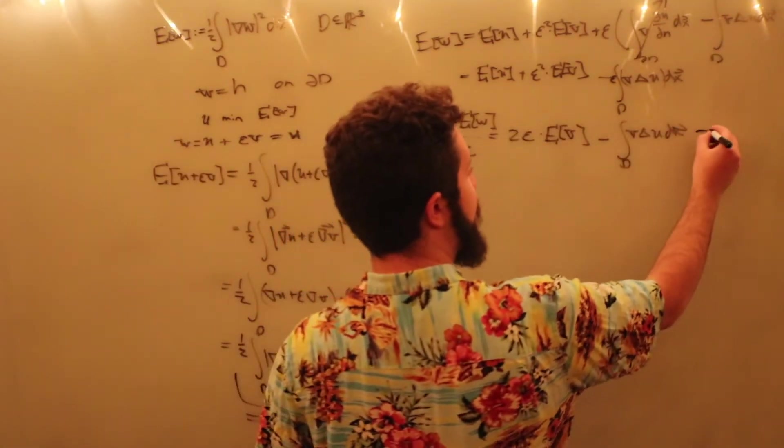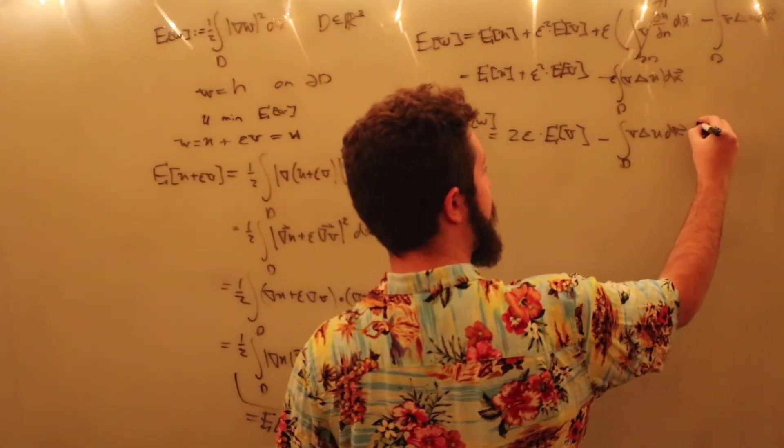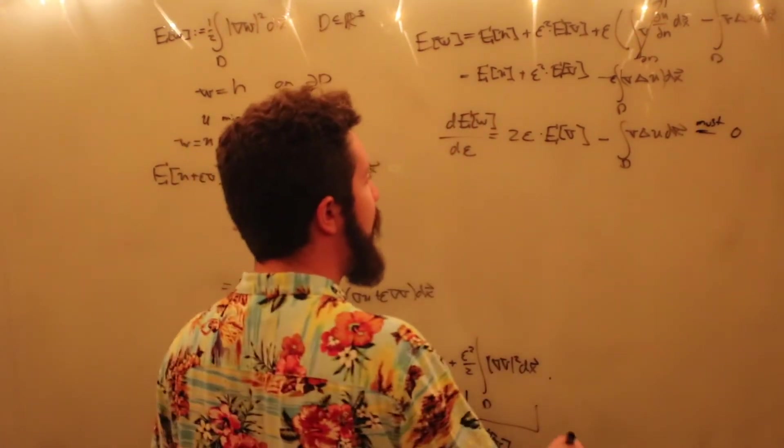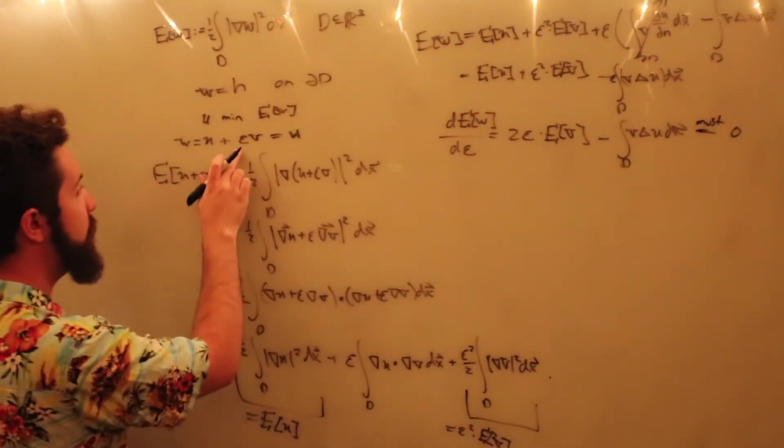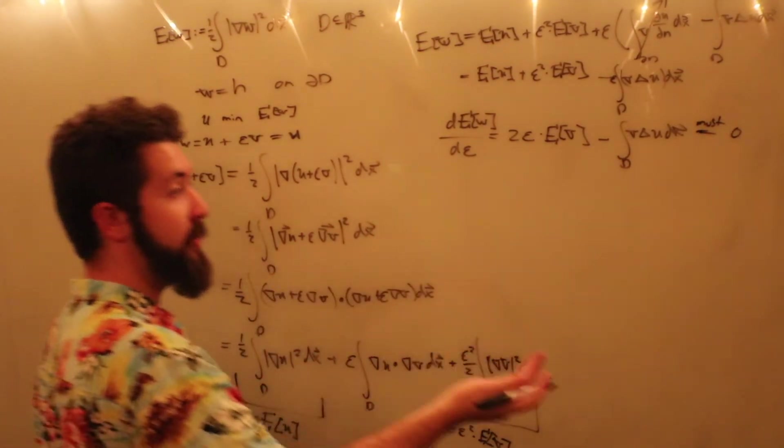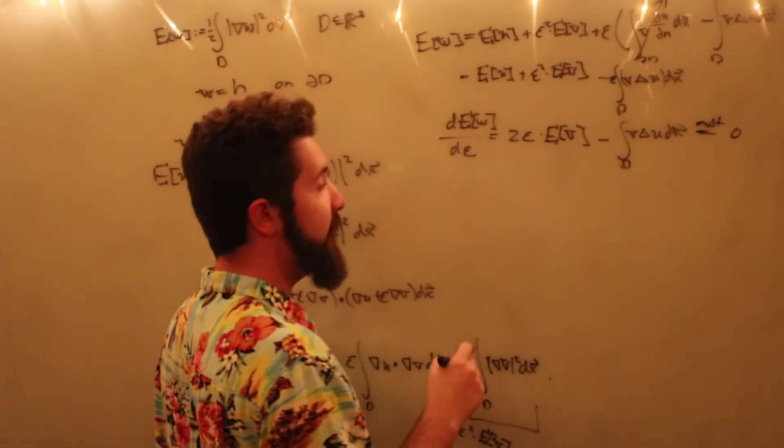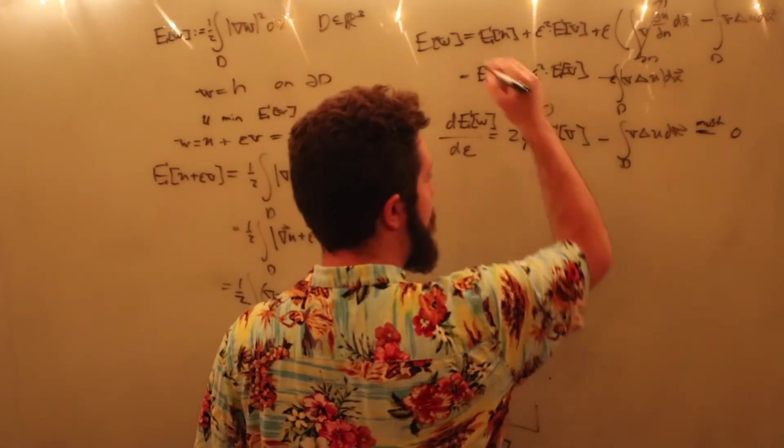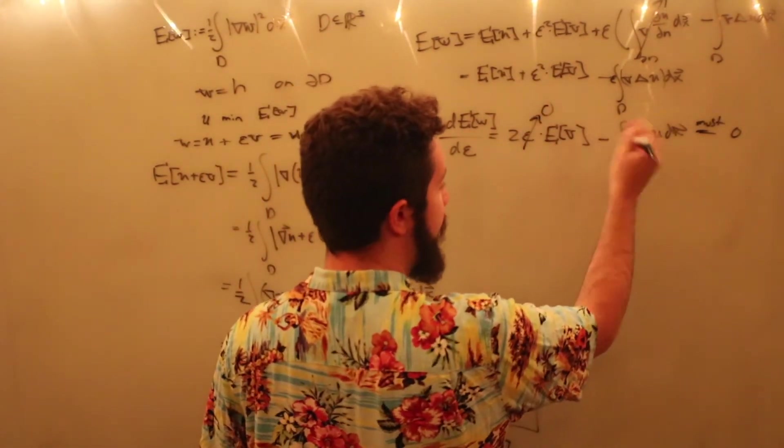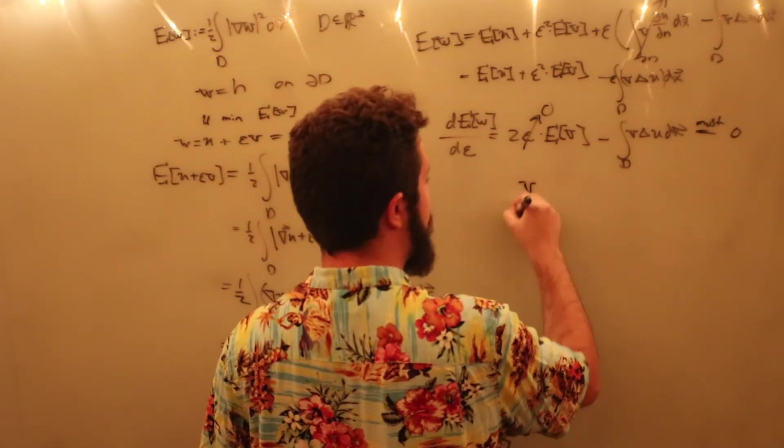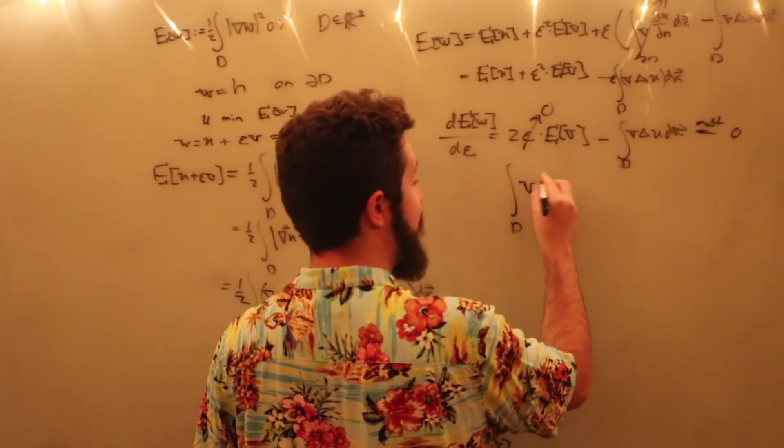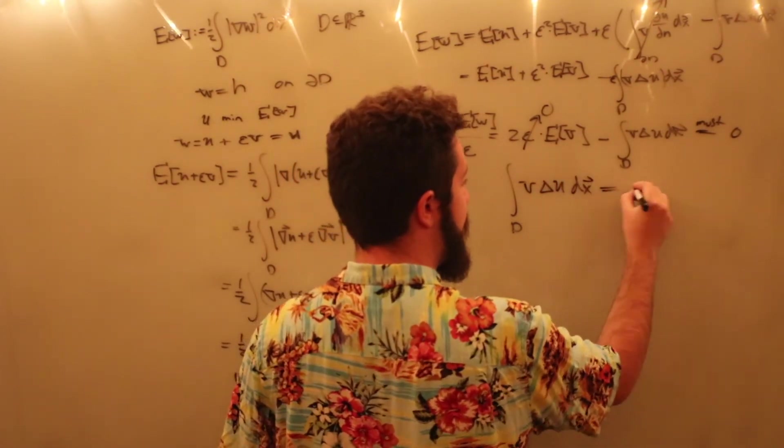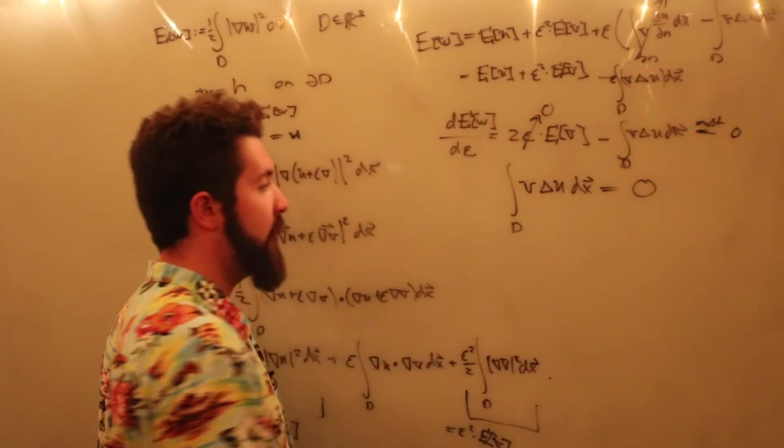Alright, so the minimum must occur for when this expression is equal to zero by normal calculus. Well, we also know by our assumption that it occurs for epsilon is equal to zero. So we know that the energy is minimized when this term goes to zero so that we can forget about the negative sign. The integral over d of v times the Laplacian of u is equal to zero.